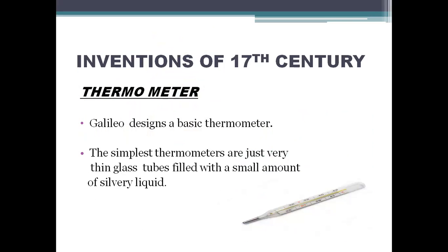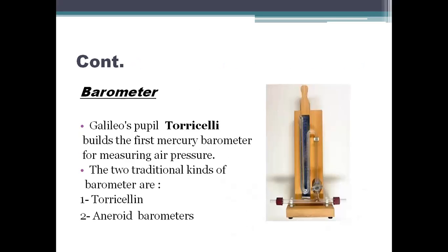Next are the inventions made in the 17th century. First is the thermometer. Galileo designed a basic thermometer. The simplest thermometers are just very thin glass tubes filled with a very small amount of silvery liquid, especially mercury. Next is the barometer. Galileo's pupil Torricelli built the first mercury barometer for measuring air pressure. There are basically two traditional kinds of barometer: the Torricelli barometer and the aneroid barometer. Aneroid barometers are commonly used.